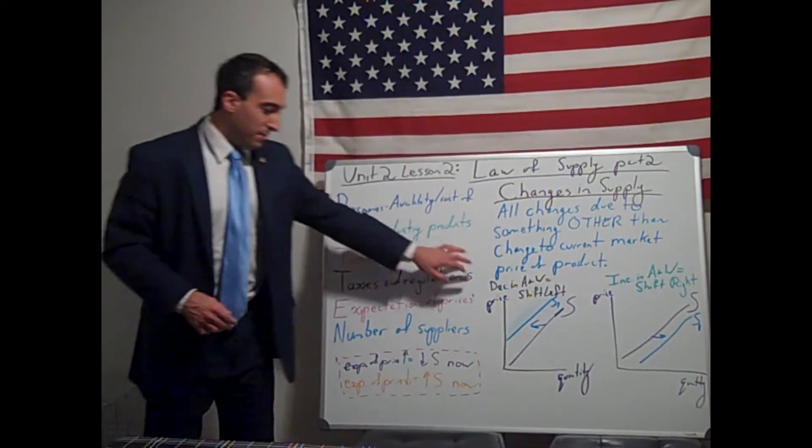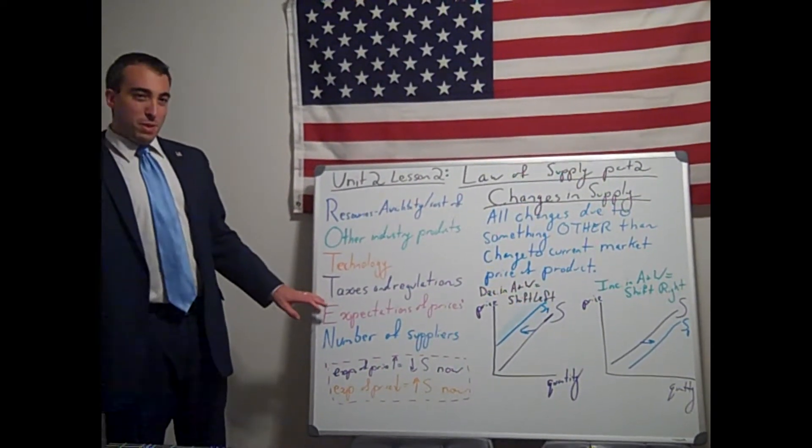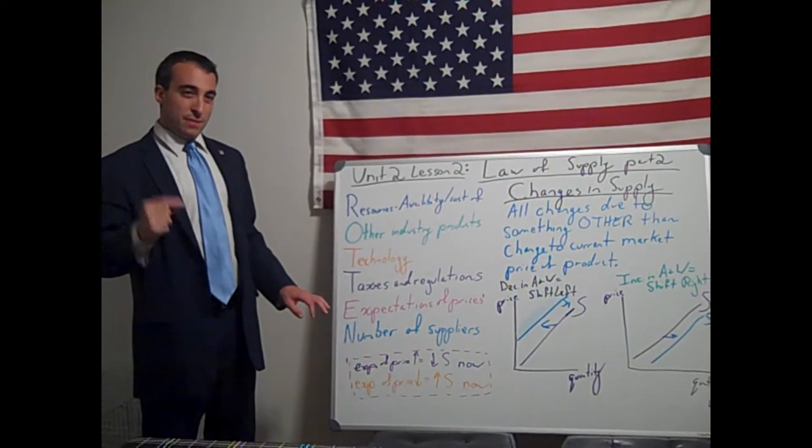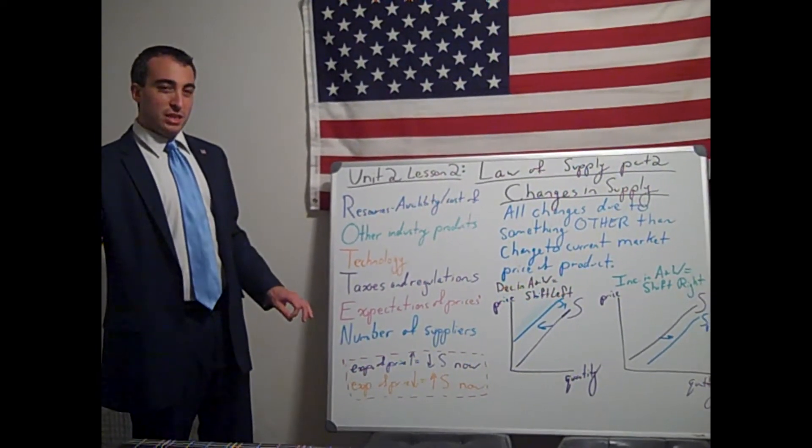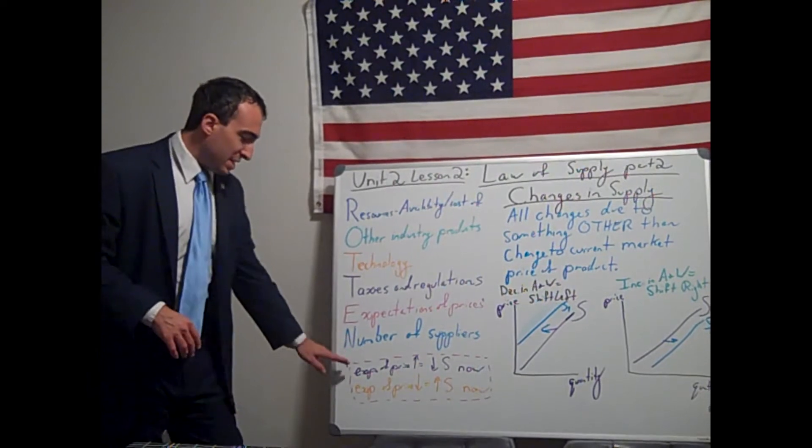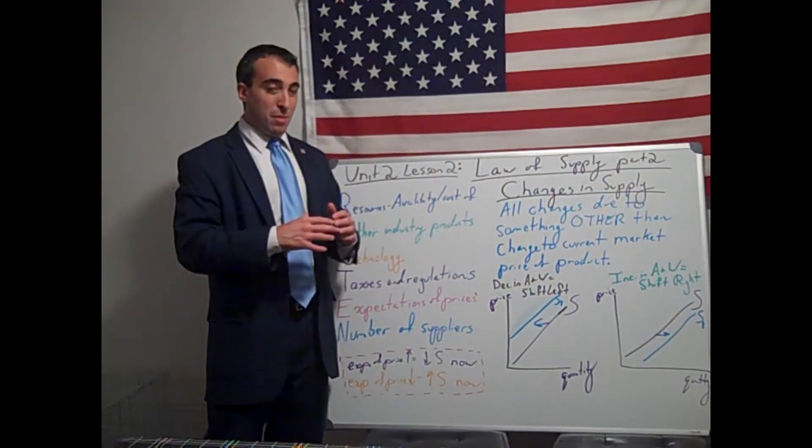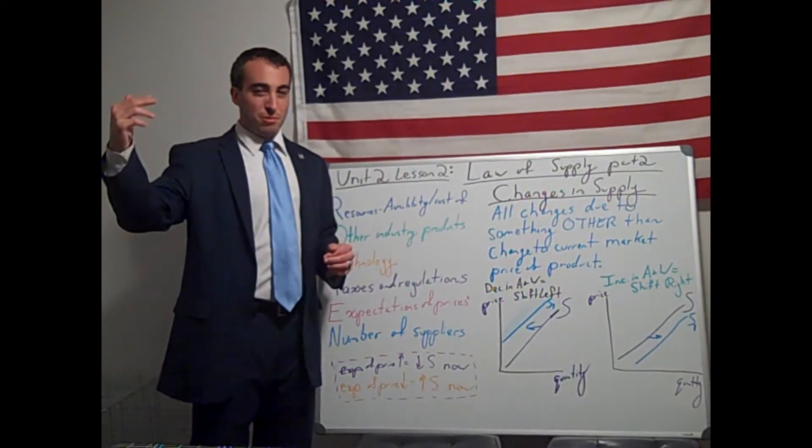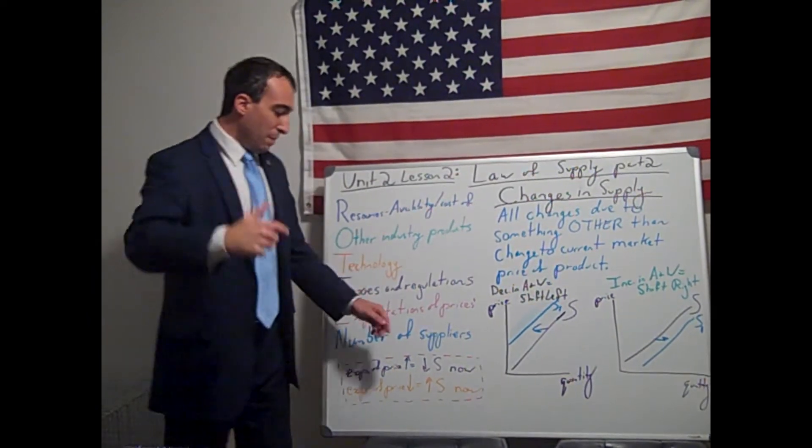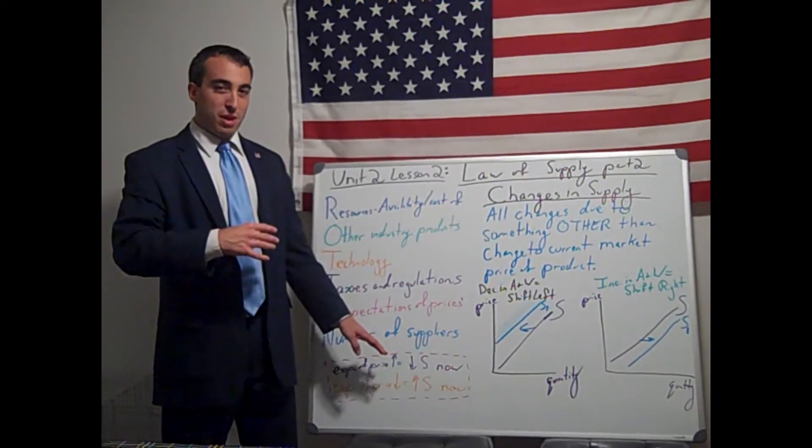Expectations of prices. This is probably the most confusing one, and it does appear. Remember, for a business, price is profit. So if businesses expect prices to change in the future, they are therefore expecting profit to change in the future and will adjust their current production accordingly. So if businesses expect prices to increase in the future, businesses will actually decrease supply now. They will hold back production and wait for those prices to increase.